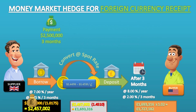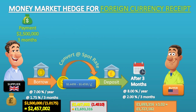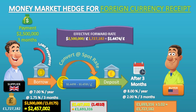After three months, the deposit will have grown to £1,727,182. Thus in three months, the loan will be repaid out of the proceeds from the buyer, and the company will receive £1,727,182 from the bank. The effective forward rate which the company has manufactured is 1.4474 dollars per pound. This effective forward rate shows the dollar at a premium to the pound because the dollar interest rate is lower than the pound interest rate.